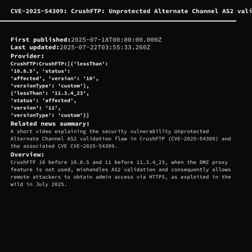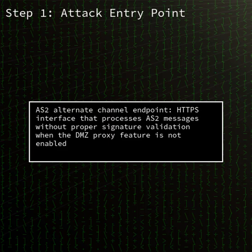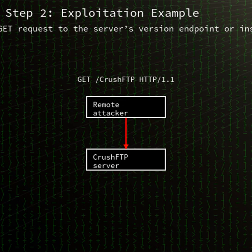In July 2025, a critical zero-day vulnerability tracked as CVE-2025-54309 was discovered in CrushFTP. Remote attackers are exploiting a flaw in AS2 validation to gain administrative access over HTTPS, leading to potential full system compromise and data theft.